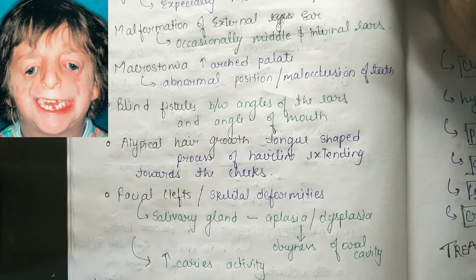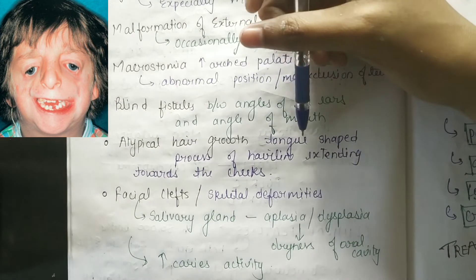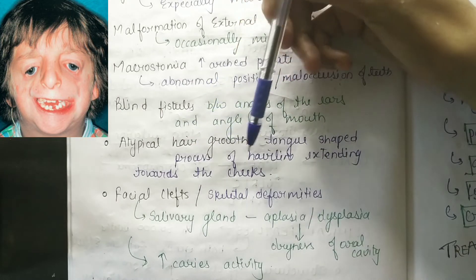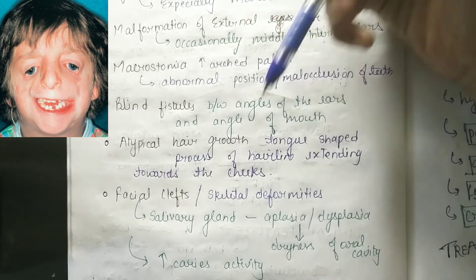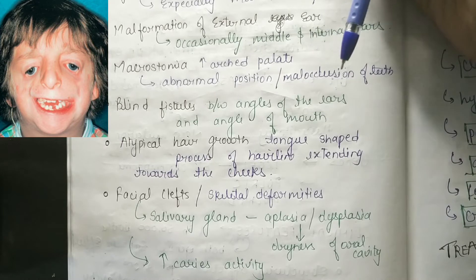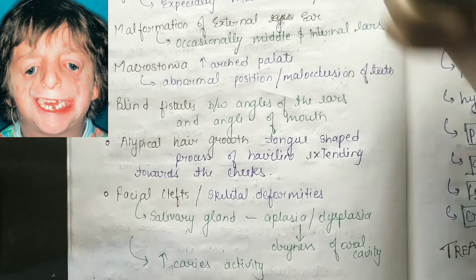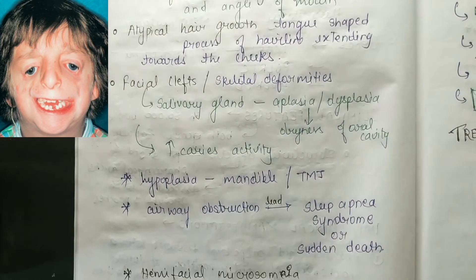Blind fistulas between the angle of the ear and the angle of the mouth are present. There is also atypical hair growth — a tongue-shaped process of the hairline extending towards the cheeks. Facial clefts and skeletal deformities are also features.